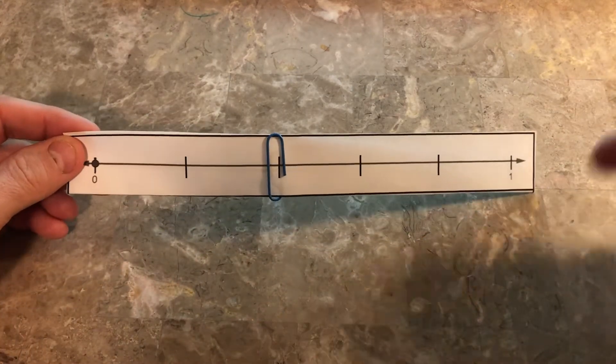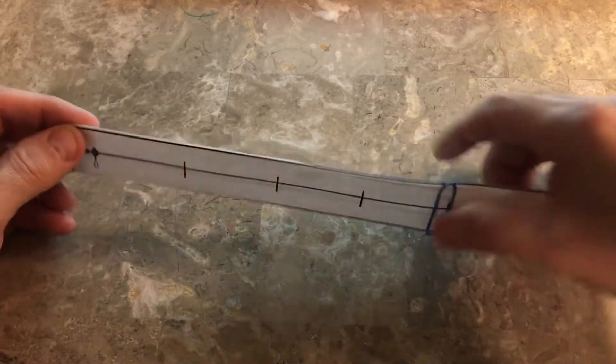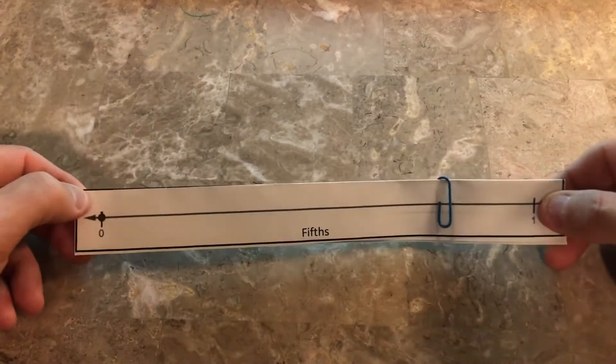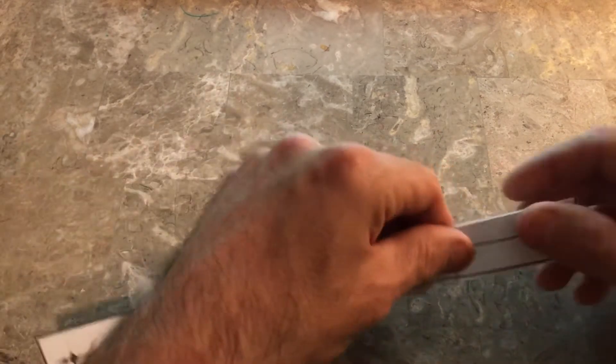The best way to do it at first is have them work with the partitioned ones. Then you can flip it over and use it as an estimate - if this is fifths, about what would this be at?